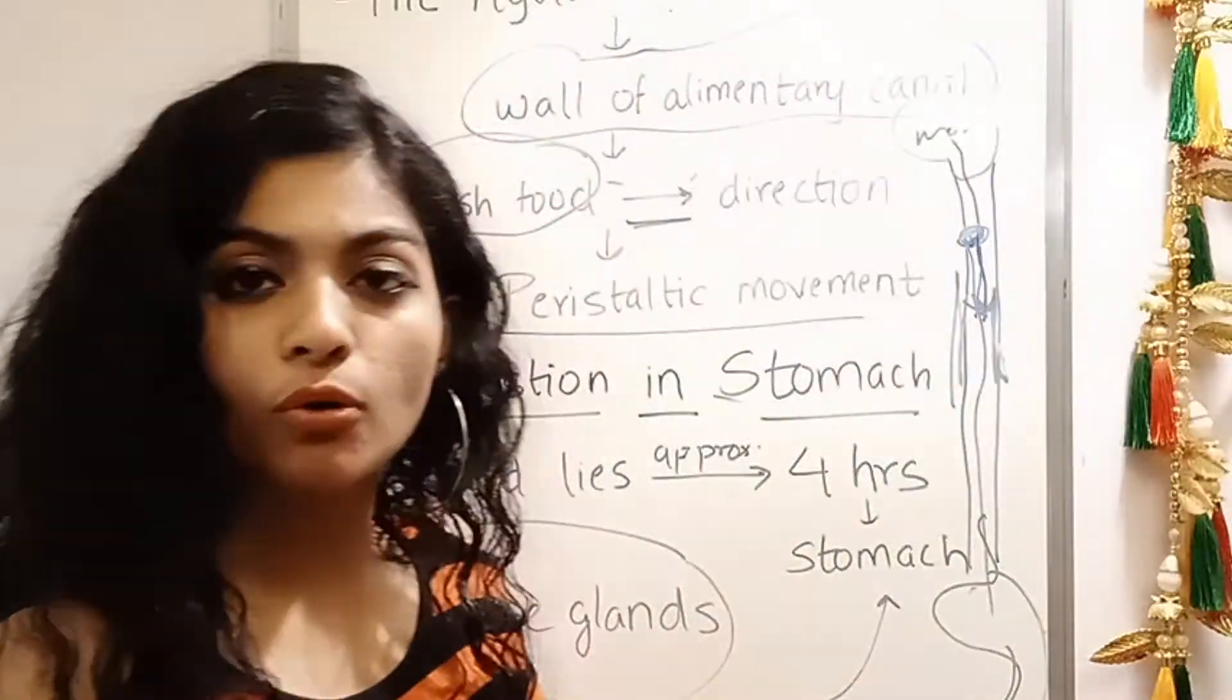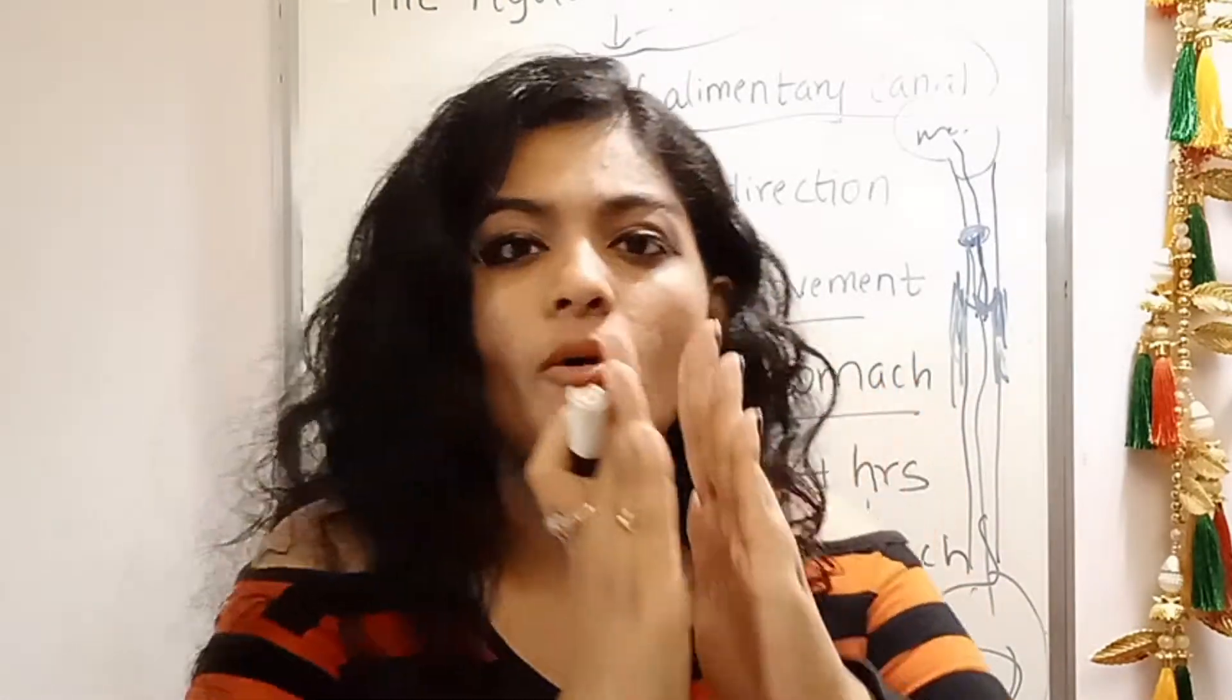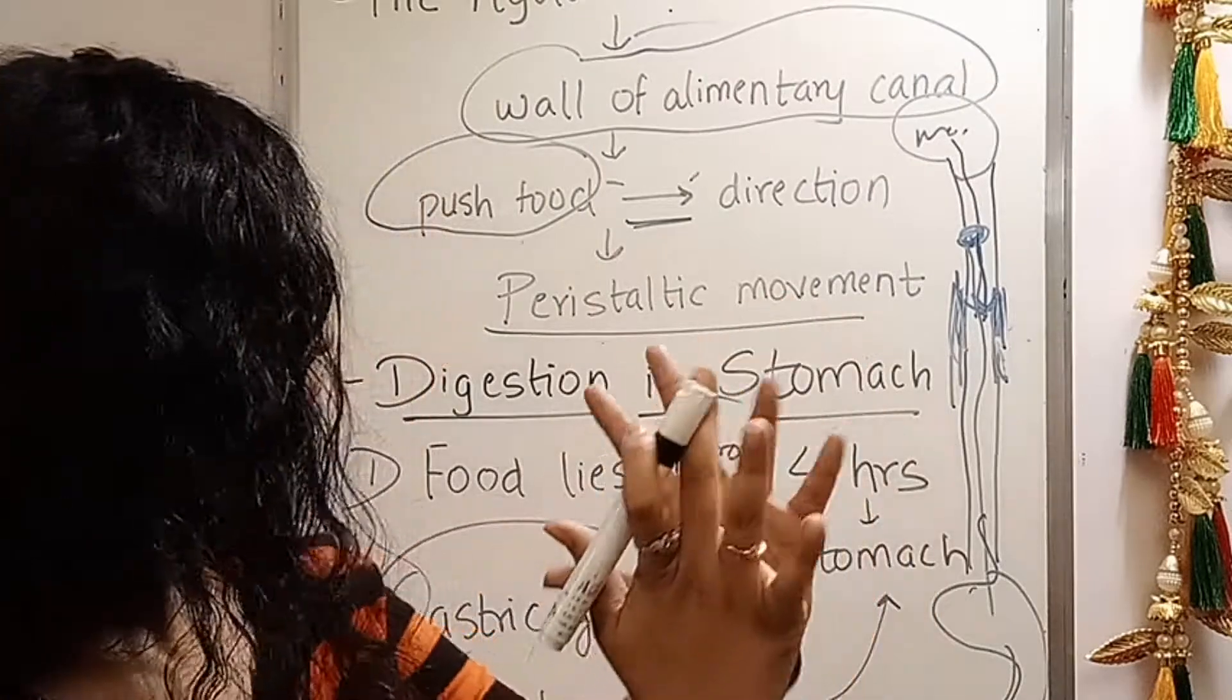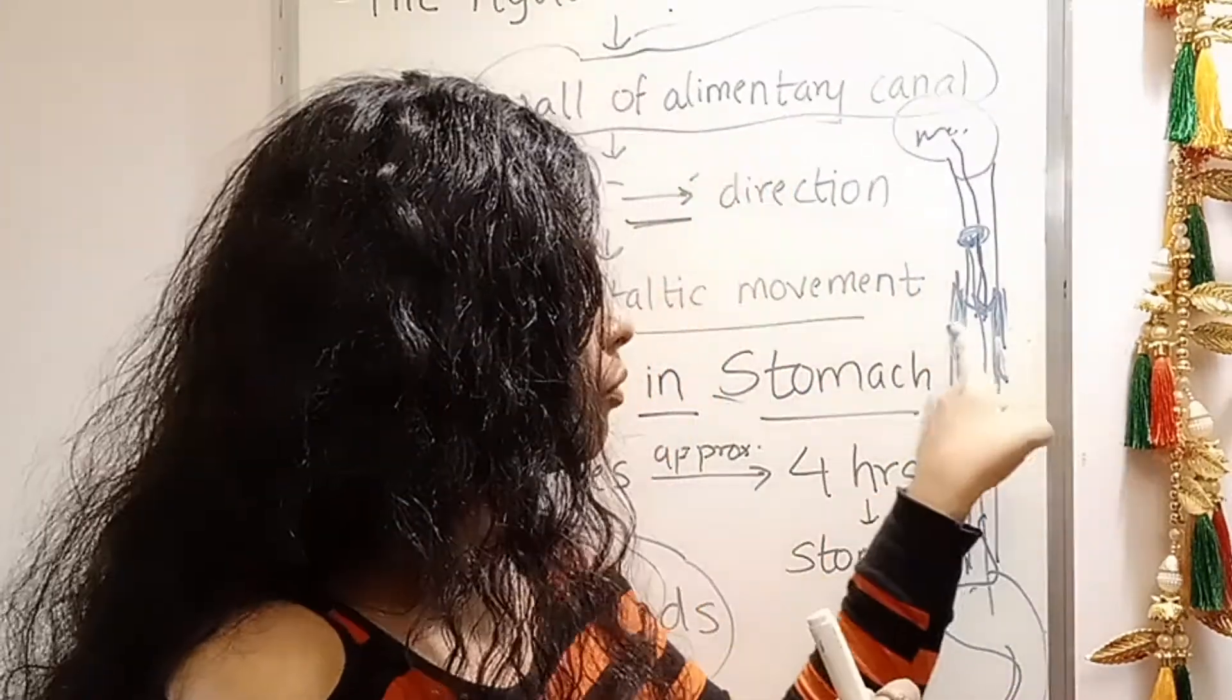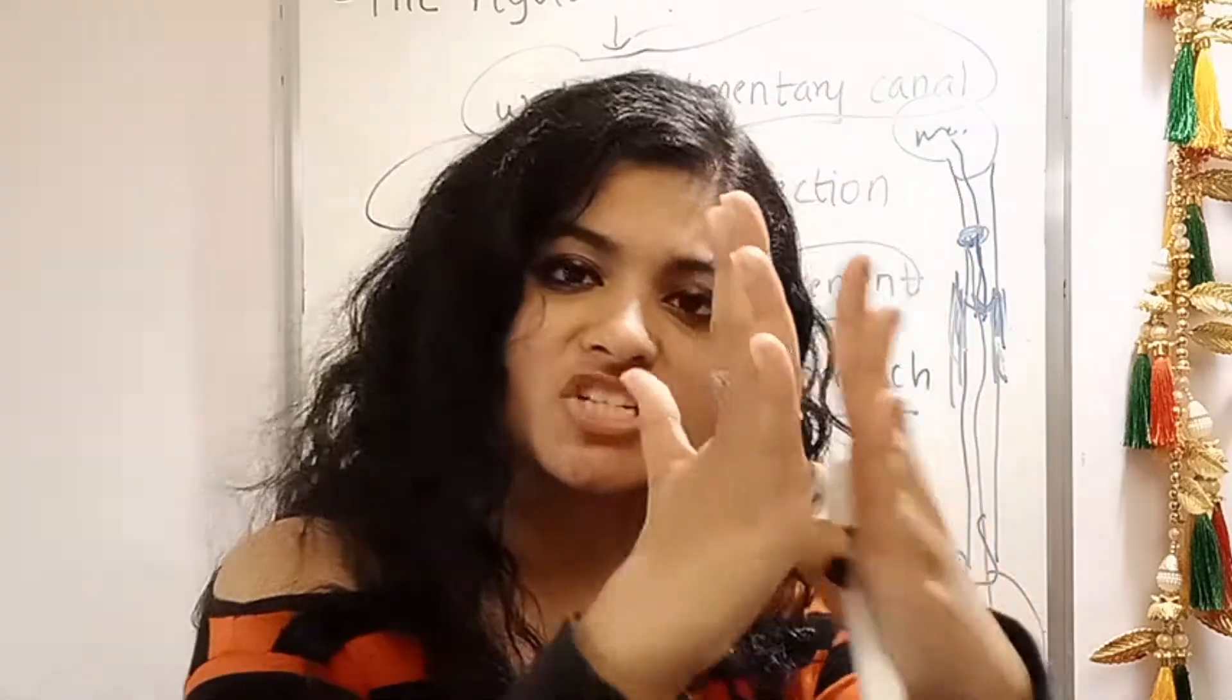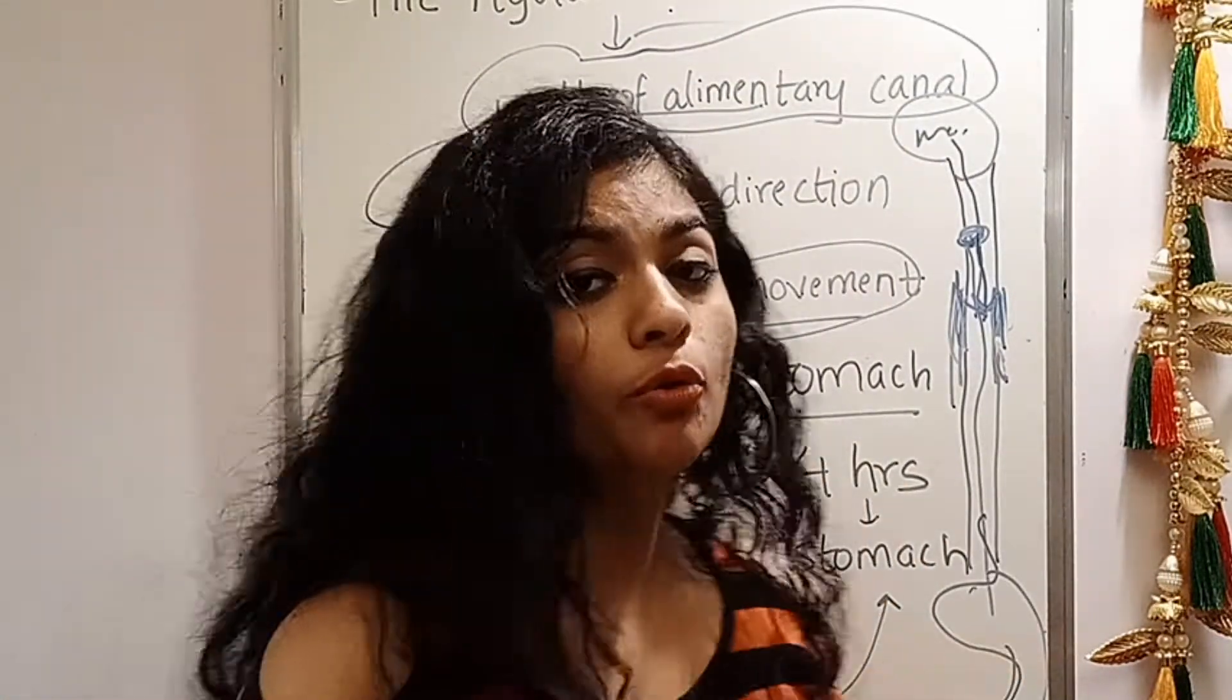When the food is pushed, the walls of the alimentary canal contract, means they are pushed forward, compressed. And then they expand, they relax. Contract, expand. Contract, expand. Just like heart. So there is contraction and expansion. And that's how the pushing of the food takes place. This movement shown by the walls of the alimentary canal, this contraction and expansion, this movement is called as peristaltic movement. It is also called as peristalsis. Peristaltic movement is this contraction and expansion, this movement shown by the walls of the alimentary canal when the food is pushed forward to the stomach.